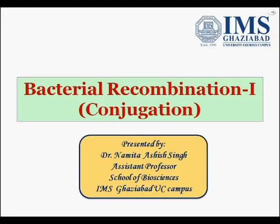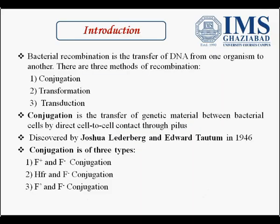Conjugation is direct cell to cell contact, and it plays a very important role in the transfer of DNA from one cell to another through sex pilus. Recombination is the transfer of DNA from one organism to another, and there are basically three methods: conjugation, transformation, and transduction. In today's lecture we will cover only conjugation.